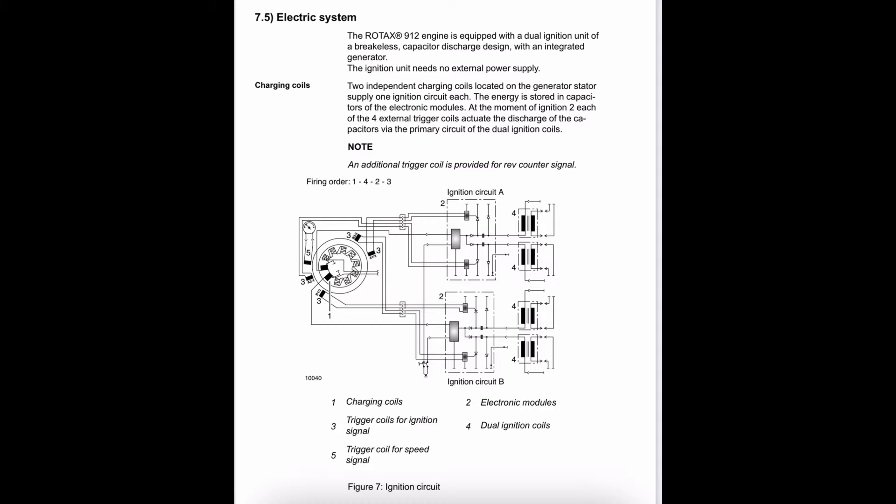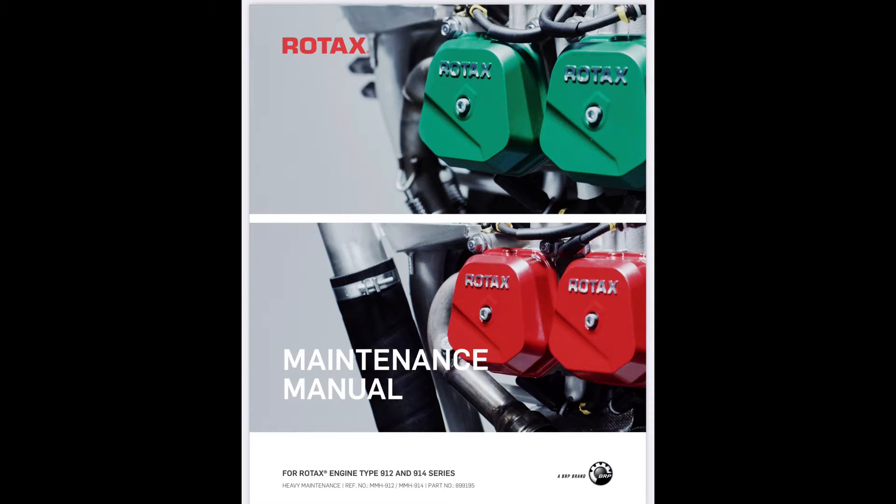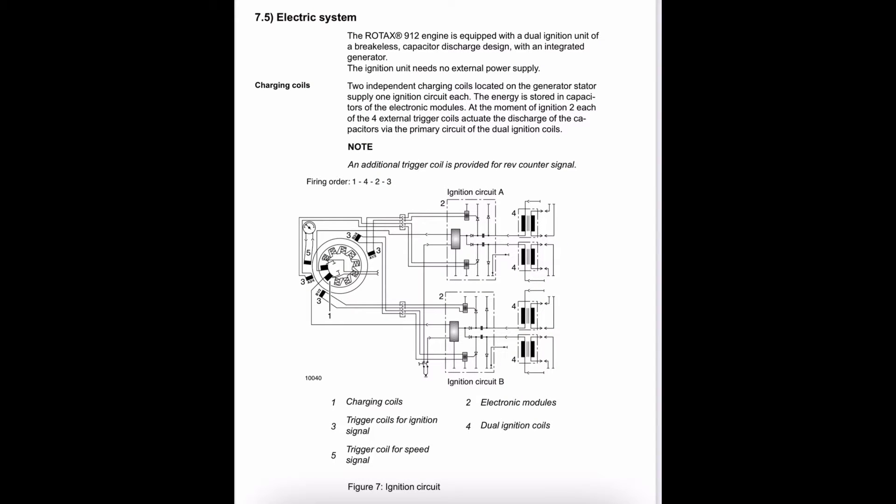All this information we can obtain by accessing the heavy maintenance manual for the 912 and 914 Rotax aircraft engines on the Rotax website. We're not going to go too deep into the weeds regarding the electrical connections and electrical flows. We will get as specific as we can, but we're not electricians, and our main goal is not to master the theory of electricity.